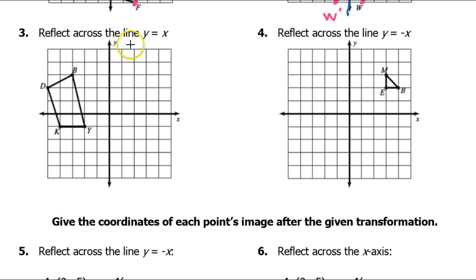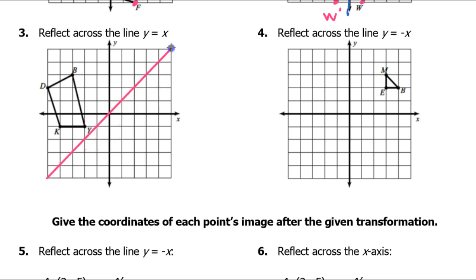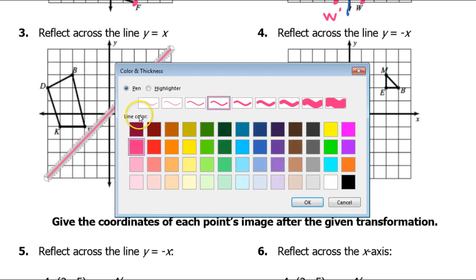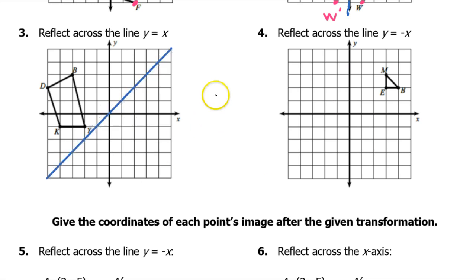For problem number three we are to use the line y equals x as the reflection line. The line y equals x is a diagonal line at a 45-degree angle, moving up one and over one diagonally. That's our mirror line, our reflection line. Since we're counting squares similarly to the previous problems, we need to count diagonally now.